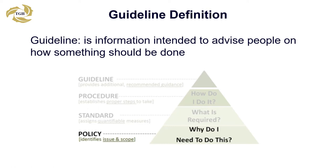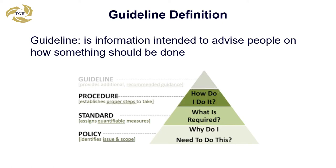Policy is a document that outlines requirements or rules that must be met and answers the question: why do I need to do this? Standard is a set of requirements about a given area that must be adhered to by everyone, and answers the question: what is required? Procedure defines the specific step-by-step process to meet the requirements for implementing a policy, standard, or guideline — or: how do I do it?